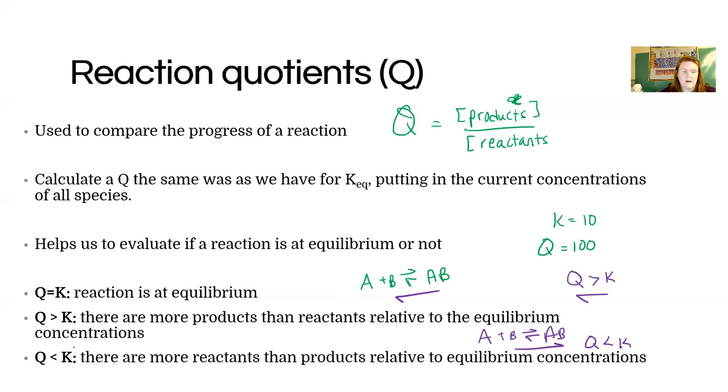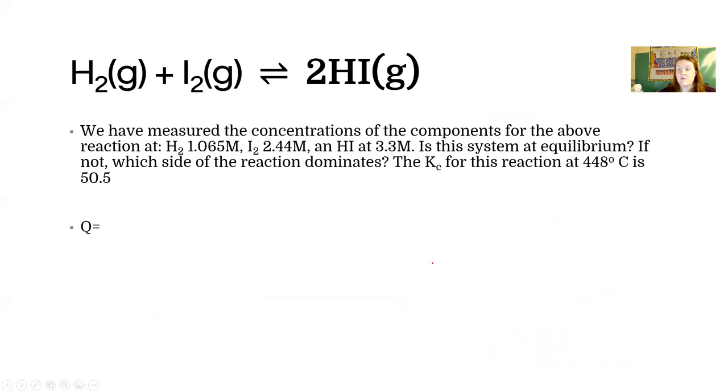I kind of think about it like the arrows go the wrong way. So what I mean by that is if I have Q greater than K, my reaction arrow goes like the opposite of this arrow and vice versa. The other way to think about it is it's going to shift in the direction that compensates mathematically. If I have too many products, that gets consumed. However you want to remember it, it's up to you.